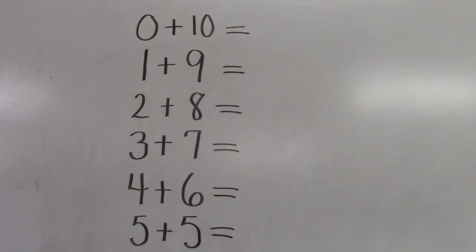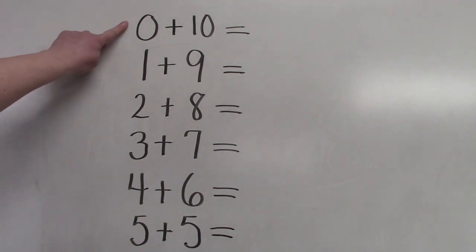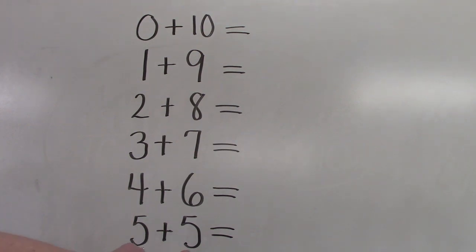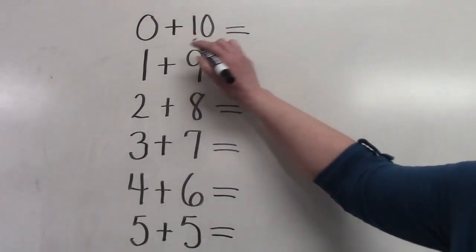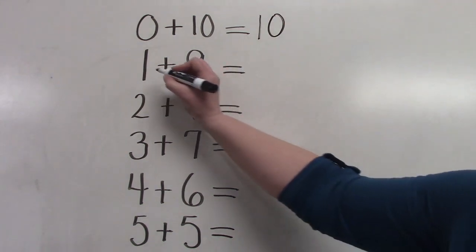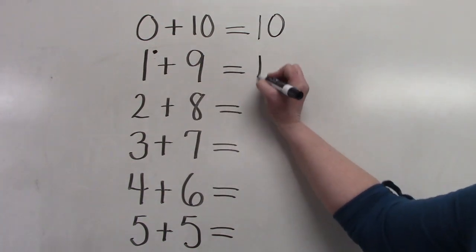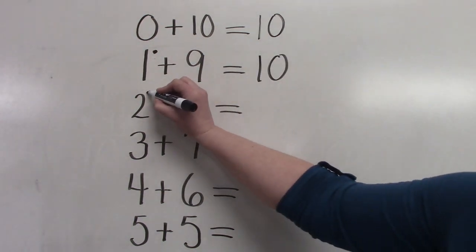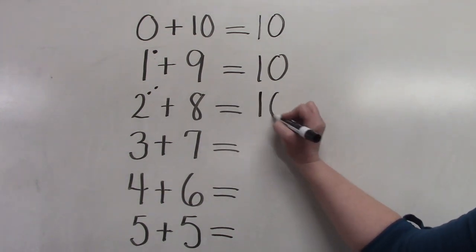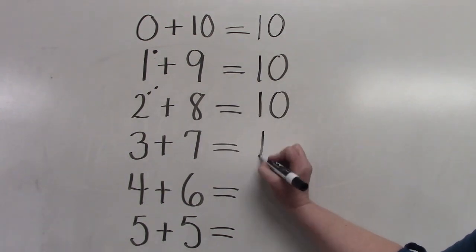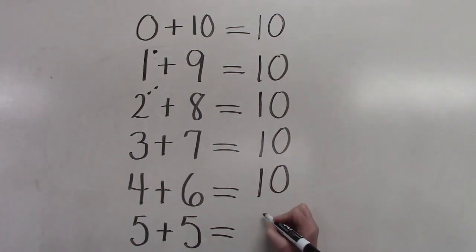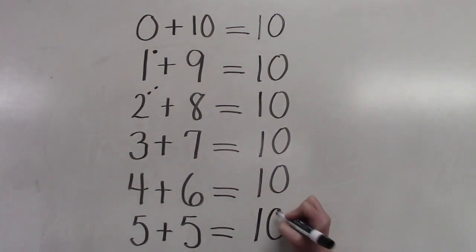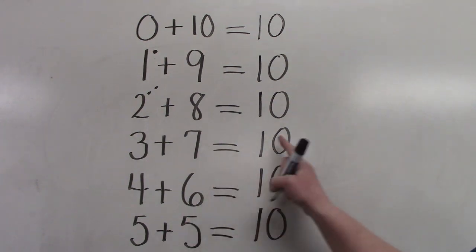I want to show you a fun pattern of when we are adding facts where the sum is always ten. Do you see the pattern? Do you see that it starts with 0, 1, 2, 3, 4, 5, 6, 7, 8, 9, 10? Let's take a look and answer these questions: 0 plus 10 is 10. 9 plus 1 is 10. 8 plus 2 is 10. 3 plus 7 is 10. 4 plus 6 is 10. 5 plus 5 is 10. All of these facts total ten.